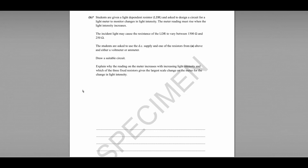This is a potential divider circuit. We have a 45 volt power supply, and in any potential divider circuit we have a couple of resistors in series. If those two resistors are the same size, the potential difference would be split equally — in this case 22.5 volts across each. The LDR is placed as the bottom resistor, varying between 1500 and 250 ohms. An LDR has a negative coefficient, so as light intensity increases, resistance decreases.